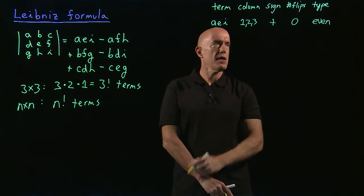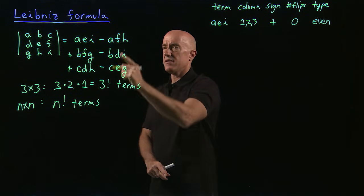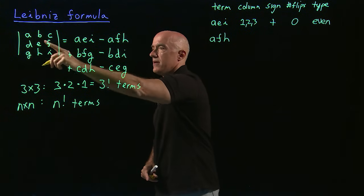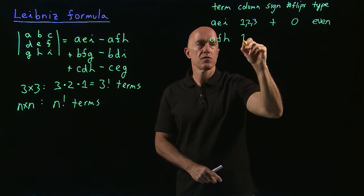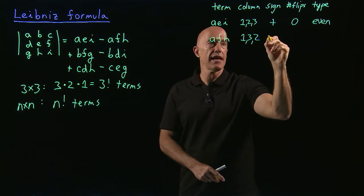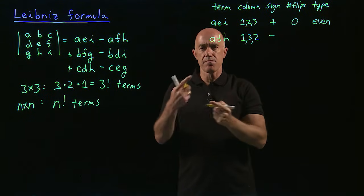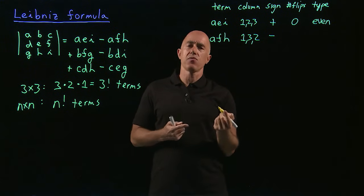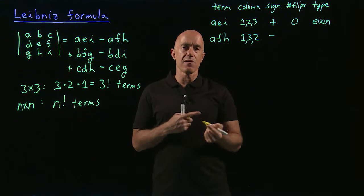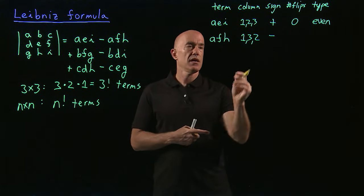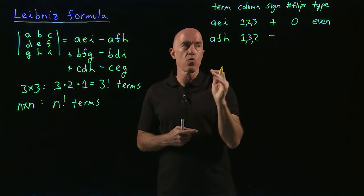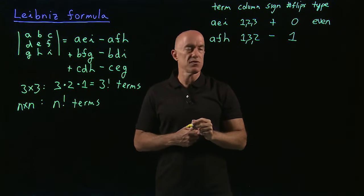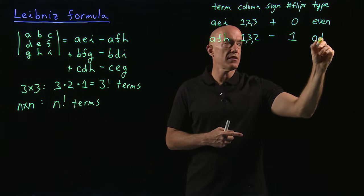The next term is A, F, H. The column orders are column one, column three, column two — so 1, 3, 2. The sign is negative. How many permutations do we need to go from 1, 3, 2 to 1, 2, 3? You just need to swap two and three — that's one permutation. So the number of flips is one. One is an odd number, so that's odd.